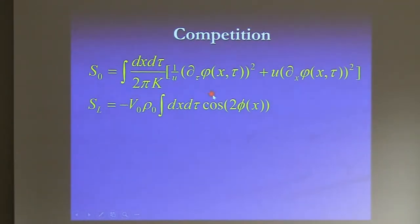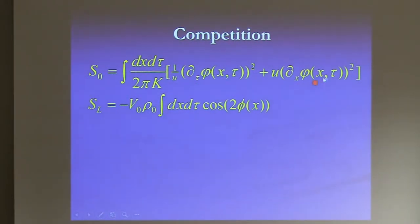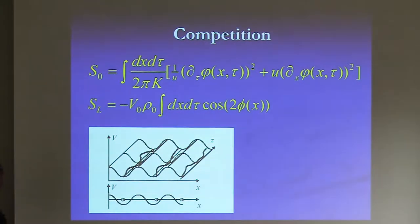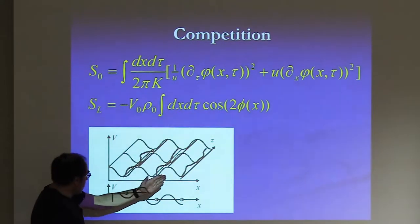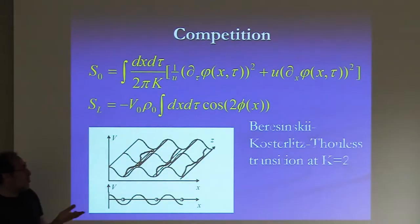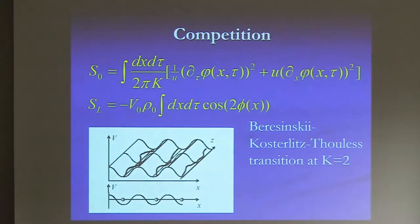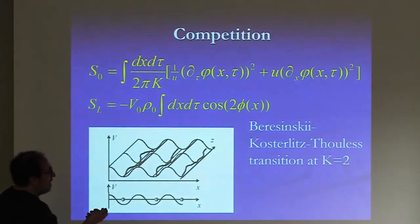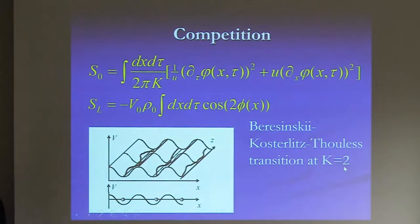There will be a phase transition. In one phase the field phi is locked to the minima; in the other it fluctuates freely. This transition is exactly a Berezinskii-Kosterlitz-Thouless (BKT) phase transition, occurring at K=2. This well-known Hamiltonian is known as the Sine-Gordon Hamiltonian, describing all properties of 1D particles in a periodic potential. You can make a very precise connection: the cosine is creating a vortex of 2pi in the dual phase theta — if you want the analogy, K is like the inverse of the temperature in BKT, and the amplitude g is the vortex fugacity.